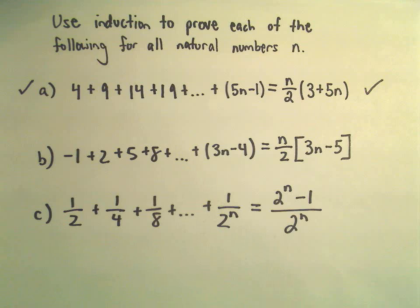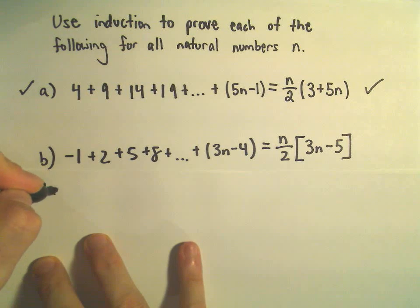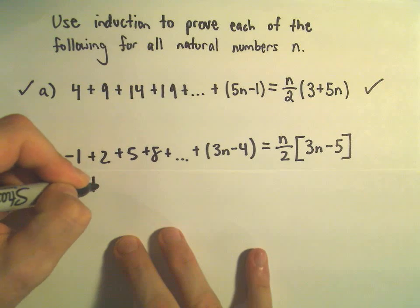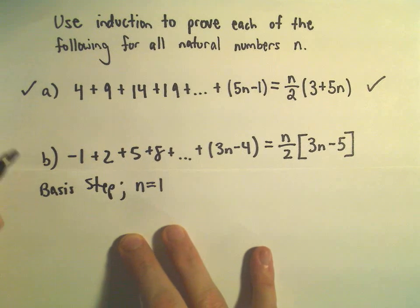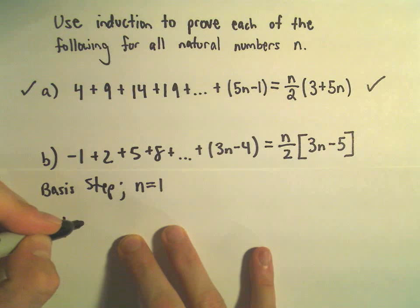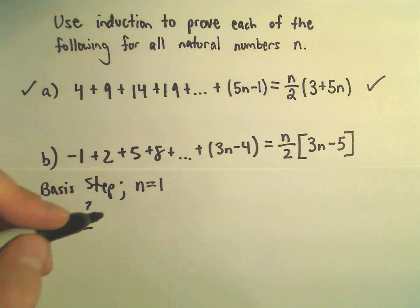So the first thing we'll do is just show this is true. We'll do our basis step. So the basis step in this case is going to be n equals 1. On the left side we'll just get negative 1. On the right side,